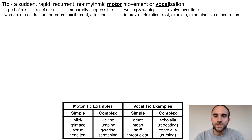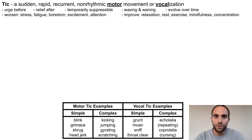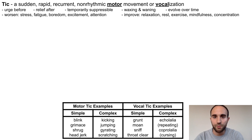Here are some examples of both motor and vocal ticks, separated by complexity. Examples of simple motor ticks include blinks, grimaces, shrugs, or head jerks, while complex motor ticks include kicking, jumping, gyrating, or scratching.